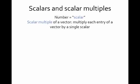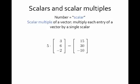A scalar multiple of a vector is what happens when you take a vector and multiply it by a number, and the way we do this is to multiply each entry of the vector by that number. For example, here I'm creating a scalar multiple of the vector 3, 6, negative 2, and the scalar is 5 — I multiply 5 to every element of the vector. We call this scalar because we are rescaling the entries of the vector.